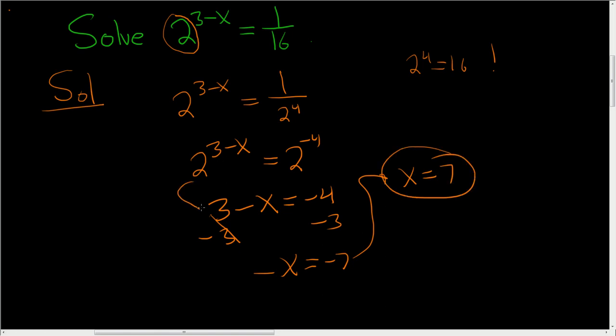Now the reason you can do this, the reason the bases go away, is because if you have b to the x equal to b to the y, then it follows that x equals y. This is because f of x equals b to the x is a one-to-one function. That's the real reason that you can do that.